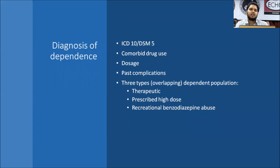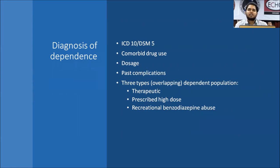Comorbid drug use and dosage of benzodiazepine, and past complications, are very important when diagnosing benzodiazepine dependence. There is overlap between three dependent populations: first, therapeutic dependence; second, prescribed high-dose dependence; and third, recreational benzodiazepine abuse.